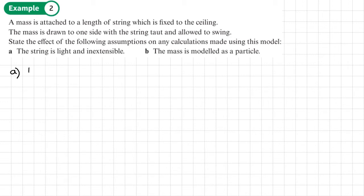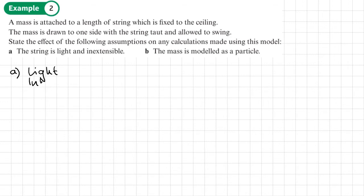We'll start with light, and then we'll do inextensible. So with light, the mass is small, so we can ignore it. Essentially we can say that the mass of the object is zero. We treat it as having zero mass. And also the tension is constant throughout the string. It's going to be the same anywhere throughout the string, at the two ends of the string.